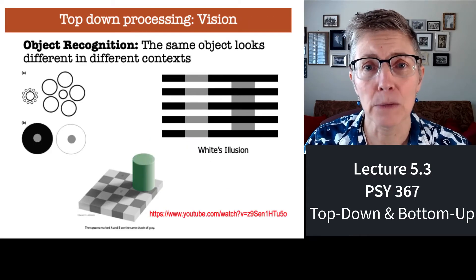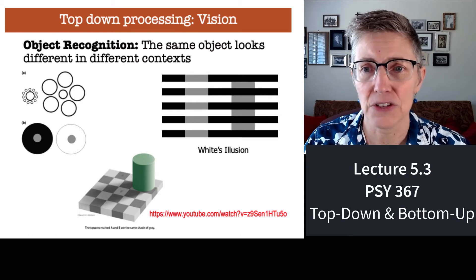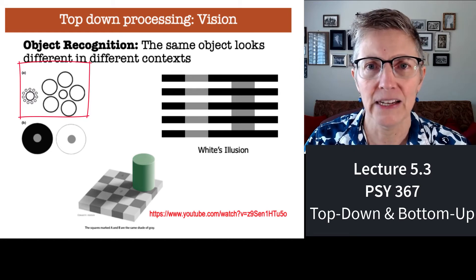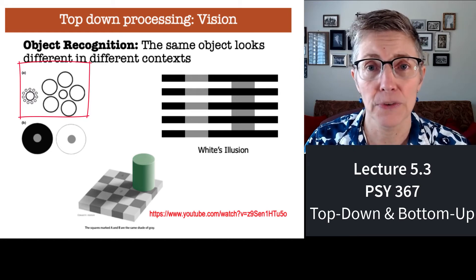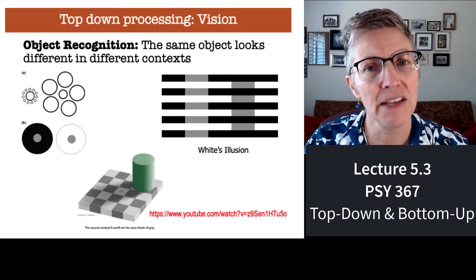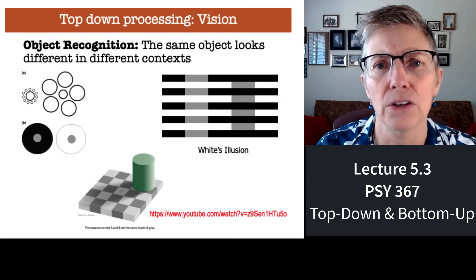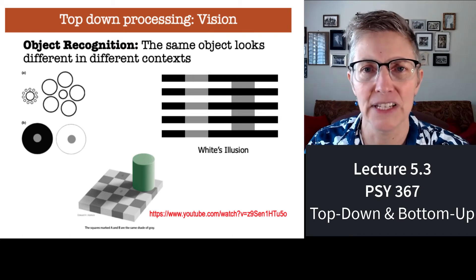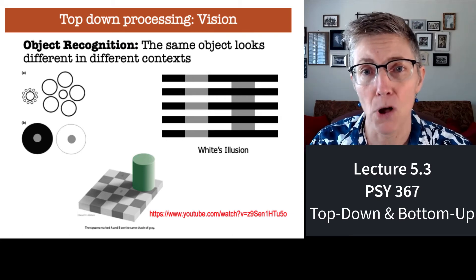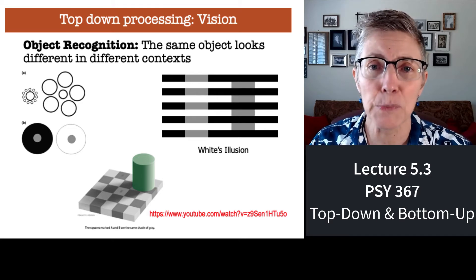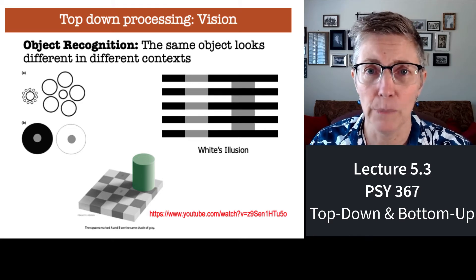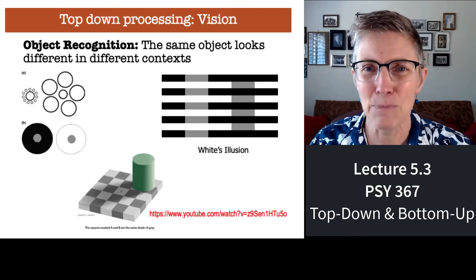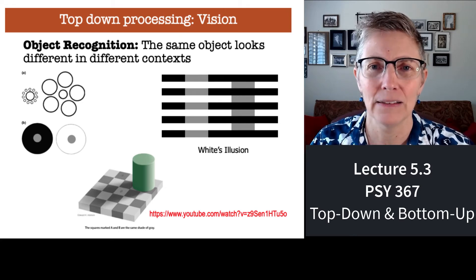Here are some more examples of top-down processing, primarily context effects. In the upper right-hand corner, there are two circles each surrounded by a number of other circles. Do the center circles look the same size, or does one seem bigger? To me, the circle on the left looks larger — the one surrounded by small circles. That's because size perception is relative. How big something looks depends on what's around it. Something surrounded by small things looks bigger than when it's surrounded by larger items.